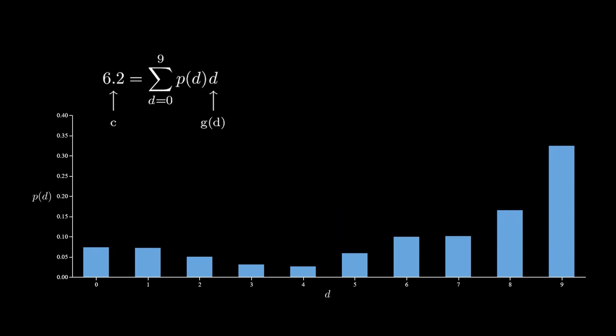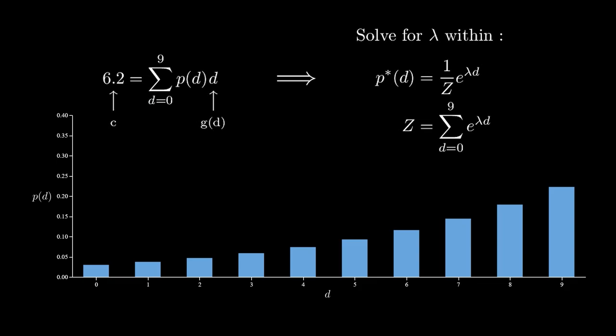Clearly, the uniform distribution doesn't have this average. But some distributions do. In fact, there's a whole range of distributions which have a 6.2 average. The principle tells us, of all of these, pick that which maximizes entropy. That turns out to be this distribution. And how did I get it? I used that sweet theorem. That is, I solved for lambda according to this equation. The moment I found a lambda that gives a 6.2 average, I know that's the maximum entropy distribution.